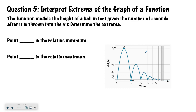Now look at this graph — a function that models the height of a ball in feet given the number of seconds after it is thrown into the air. Determine the extrema. Hopefully you said point B is our relative minimum because it's the low point, and point A is our relative maximum because it's our highest point on the graph — the highest point that ball reached in the air.